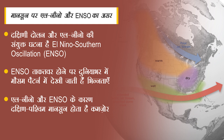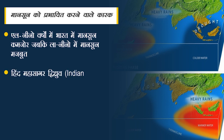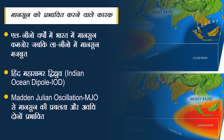इंडोनेशिया से लेकर हिंद महासागर के भारतीय-ऑस्ट्रेलियाई क्षेत्र के वायुदाब में होने वाले बदलाव को Southern Oscillation यानी ENSO के नाम से जाना जाता है। जिस साल ENSO ताकतवर होता है, दुनिया भर में मौसम पैटर्न में काफी भिन्नताएं देखने को मिलती हैं। उस साल सूखा रहने वाले दक्षिण अमेरिका के पश्चिमी तट पर भारी बारिश होती है जबकि ऑस्ट्रेलिया और भारत में सूखा पड़ता है। इस कारण भारत में दक्षिण-पश्चिम मानसून कमजोर हो जाता है। La Niña भी मानसून का रुख तय करने वाली सामुद्रिक घटना है जो आमतौर पर El Niño के बाद होती है, और इसमें समुद्री सतह का तापमान बेहद कम हो जाता है।